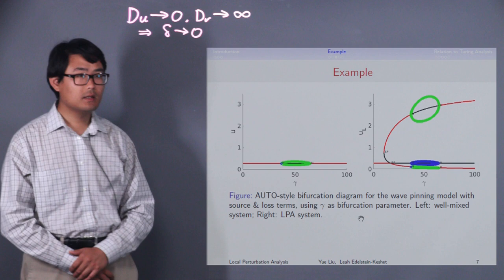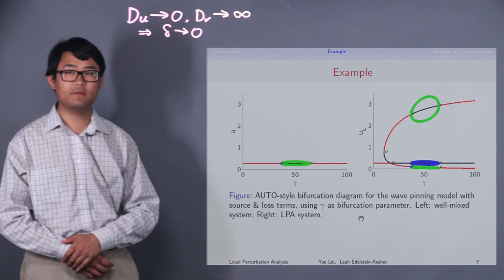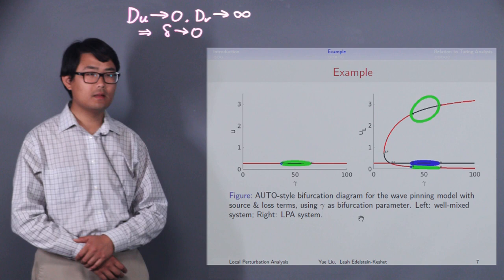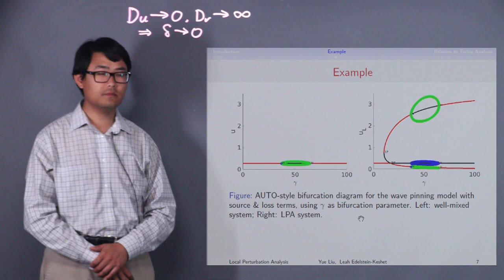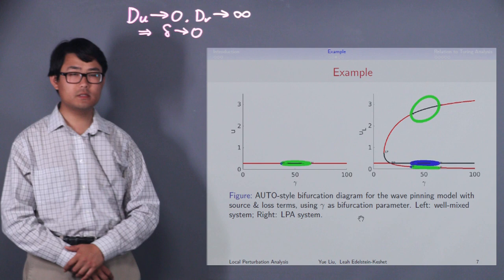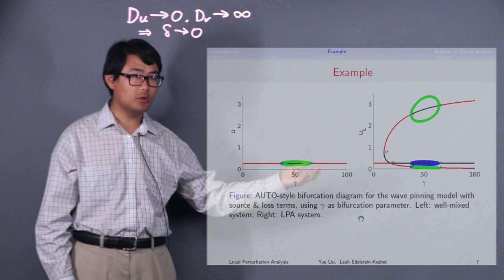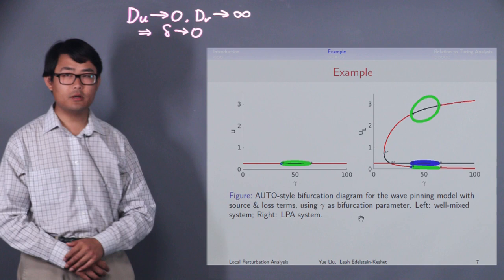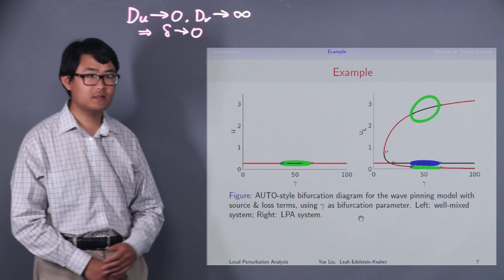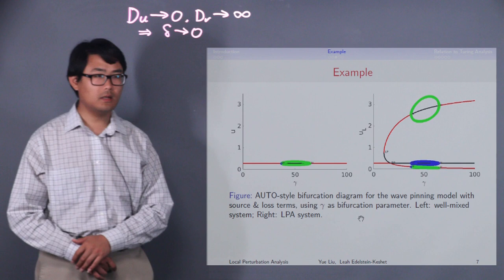Here is the result. The diagram on the left is a bifurcation diagram for the well-mixed system, and on the right, for the LPA system. This diagram follows auto style convention, which means the red lines are stable branches of equilibrium. The black lines here are unstable branches of equilibrium. The green and blue are stable and unstable periodic solutions.